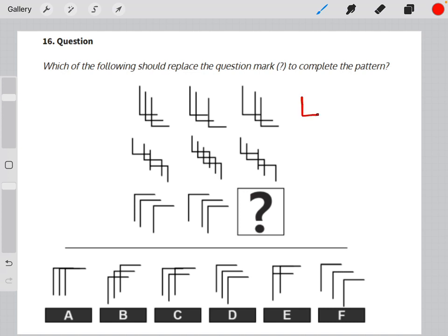In the first row, we are made up of L shapes. In the second row, it's made up of these shapes. And in the third row, it's made up of upside-down L shapes.